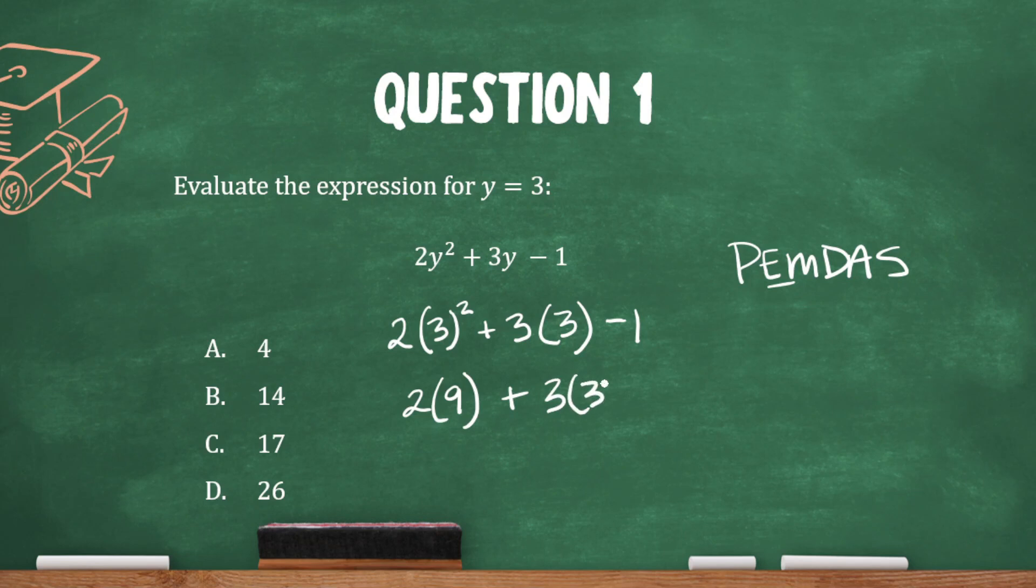And now we can deal with our multiplication. So 2 times 9 is 18 plus 3 times 3 is 9. And now all we have left is our addition and subtraction. So 18 plus 9 is 27, and 27 minus 1 is 26.